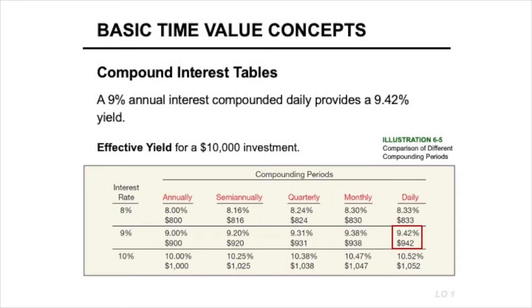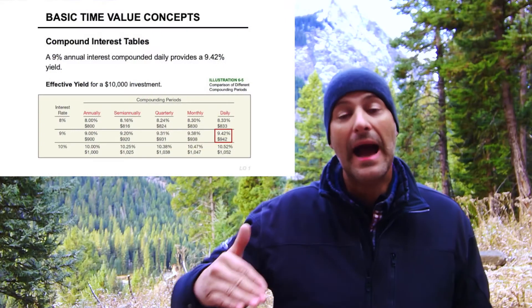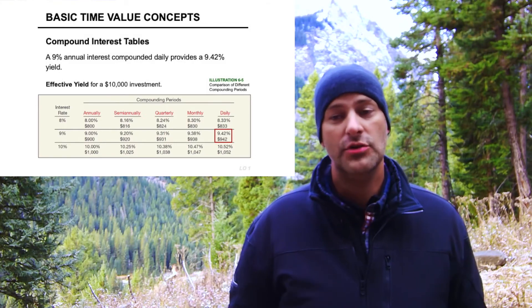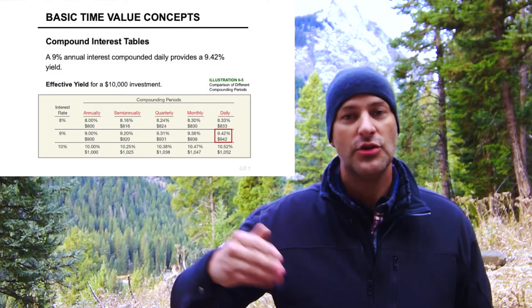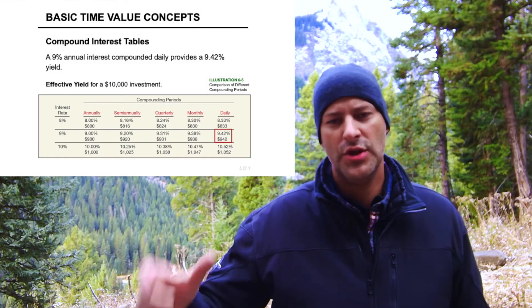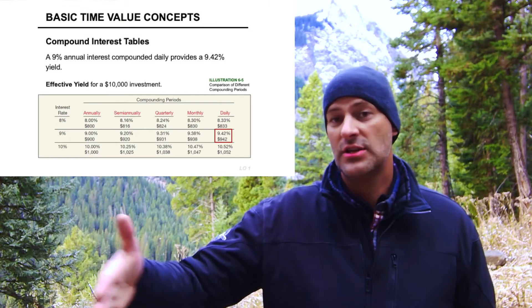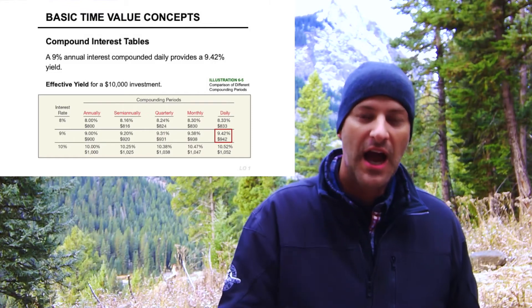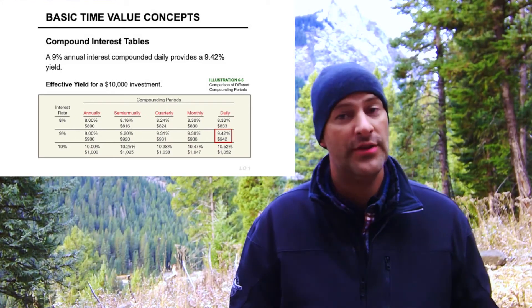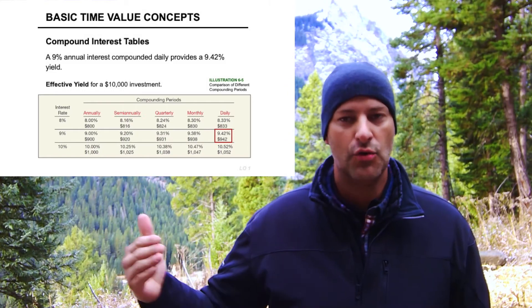The more frequently money compounds, the more you'll be paying, because the principal you're paying interest on grows faster each period. If something compounds annually, your rate is exactly as stated — 12%. If it compounds monthly, and you don't pay interest every month, your effective rate will be higher than 12%. If compounding daily, your effective rate is much higher because every day you're borrowing a little more than the day before.